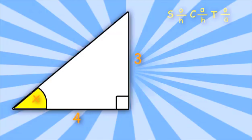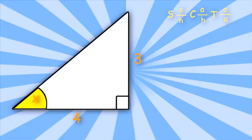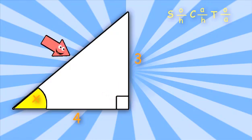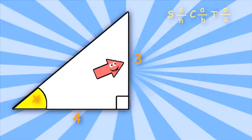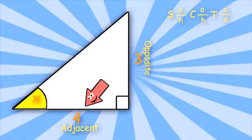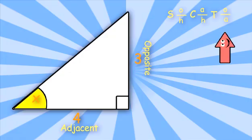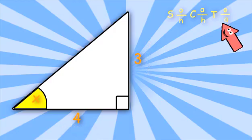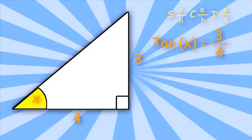Let's do another problem. Here we are asked to find the measure of the yellow angle. Let's start by finding the hypotenuse — I'll look across the 90 degree angle, and there it is. In relationship to the yellow angle, this side is the side opposite, so that makes this side the side adjacent. I'm given opposite over adjacent, which means I'll use tangent of x. Tangent of x equals 3 over 4, opposite over adjacent.